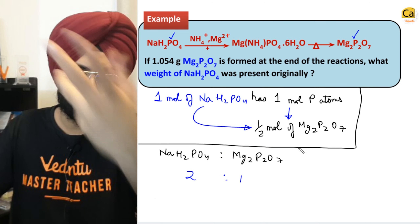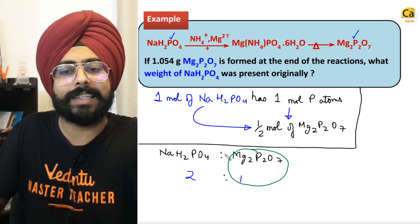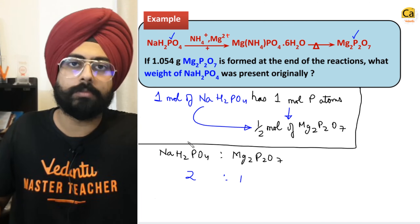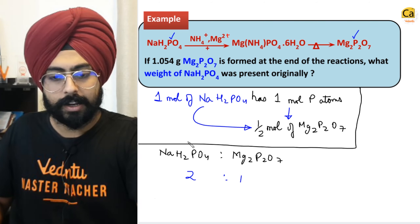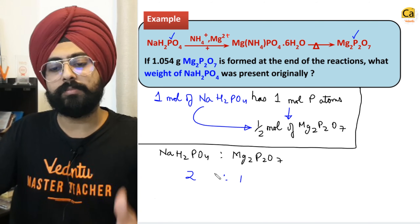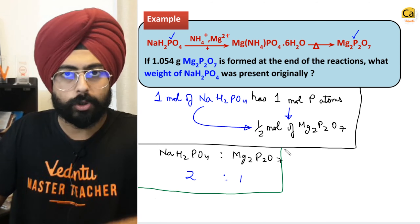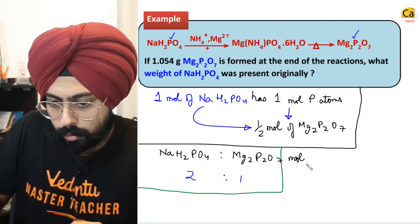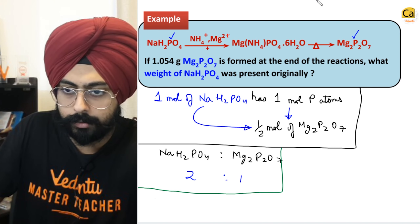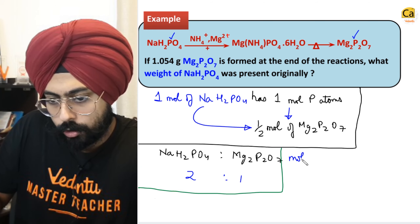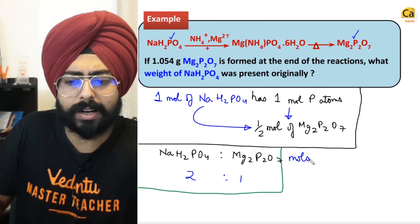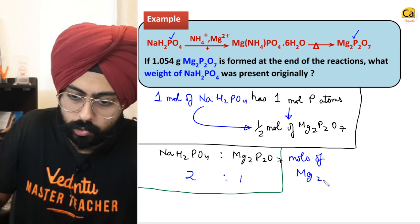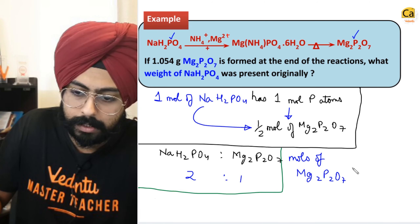Inversely, if 1 mole of Mg2P2O7 is created at the end, 2 moles of NaH2PO4 would have been there initially. Now that we have molar ratios, let's convert mass into moles and do the calculation. Moles of Mg2P2O7 = 1.054 divided by molecular weight of Mg2P2O7.